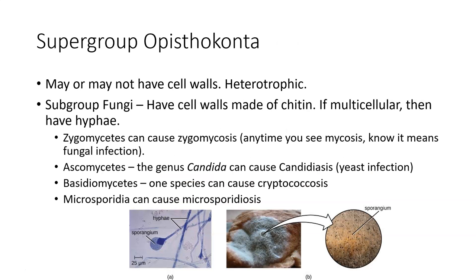Opisthokonta is the group that animals are actually in, but so are fungi, so we're not going to spend a lot of time talking about animals aside from some worm species. We will spend some time talking about fungi later on. The subgroups used to be phyla — some books still consider them phyla. Zygomycetes is where Rhizopus is, which is common black bread mold, as shown in that picture.